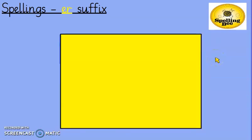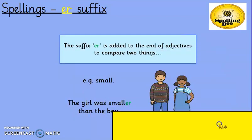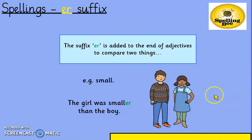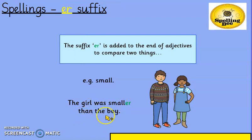Now today we're looking at the '-er' suffix. So let's find out a bit more about this suffix. The suffix '-er' is added to the end of an adjective, and an adjective is a describing word. It compares two things together. So for example, if the root word is 'small' and if I put it into a sentence, it would become 'the girl was smaller than the boy.' I'm comparing the girl to the boy.